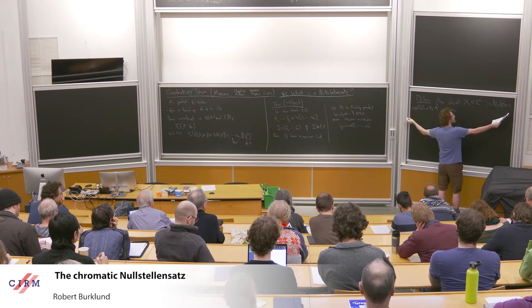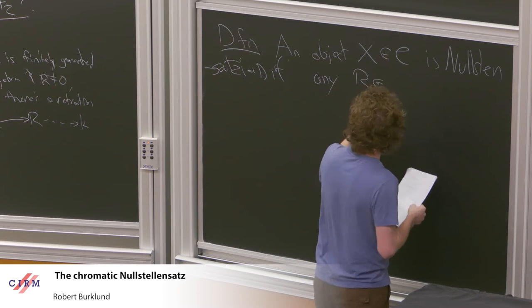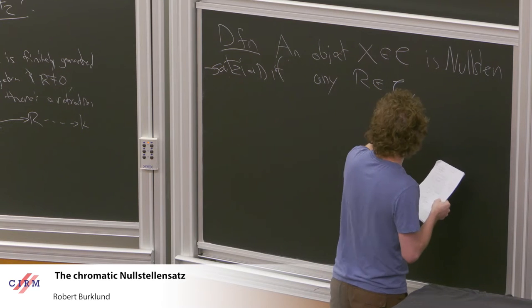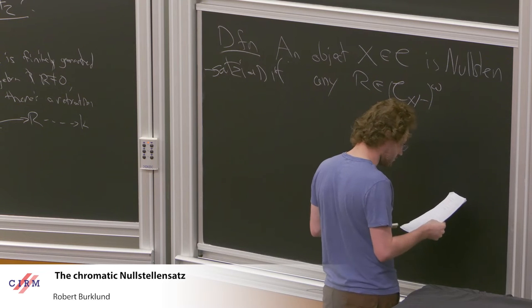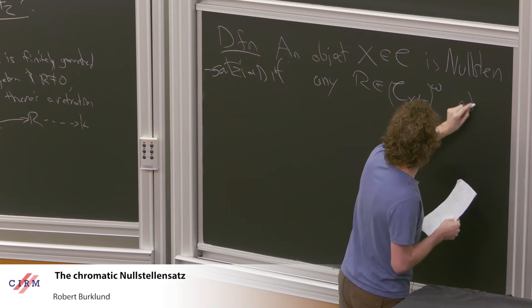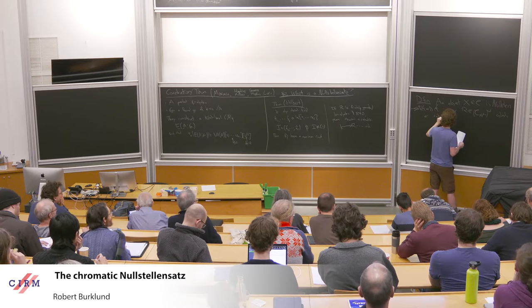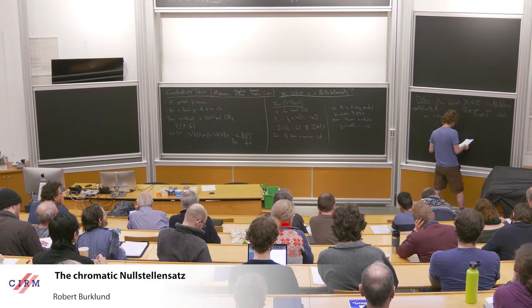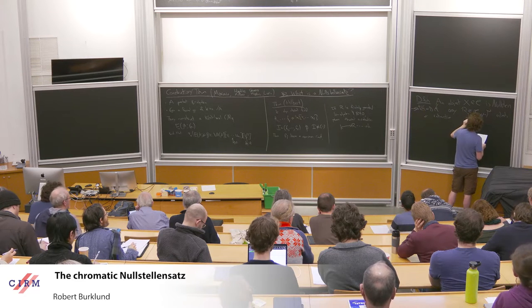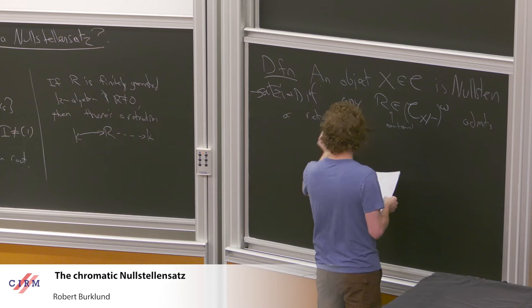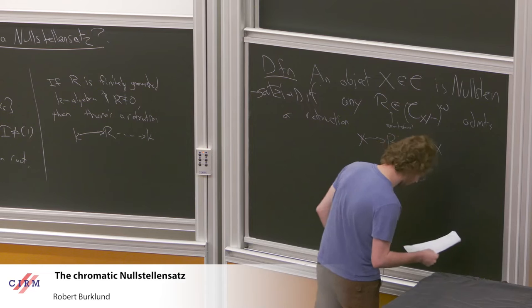So an object X in some category C, where C at least has a terminal object, is Null-Stellensatzian if any R in the category sliced under X that's compact under X admits a retraction. That is, any non-terminal object admits a retraction: X maps to R, and then there's some retraction back down to X.